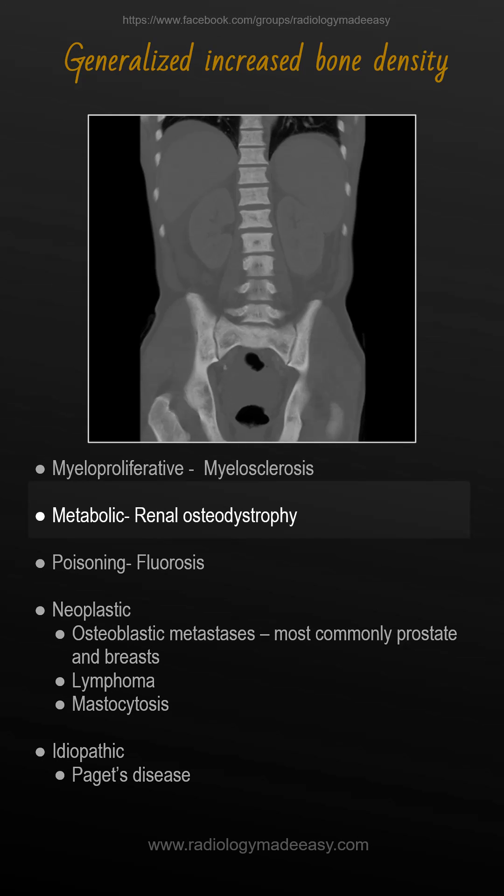Renal osteodystrophy is the most common metabolic disease that causes generalized increased bone density. Also, poisoning like fluorosis can cause generalized increased bone density, which is associated with periosteal reaction, prominent muscle attachments, and calcification of ligaments and interosseous membranes.